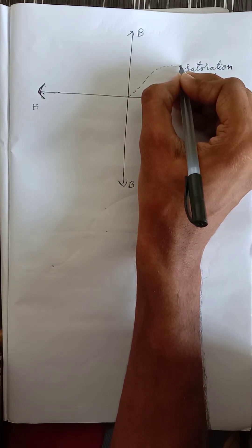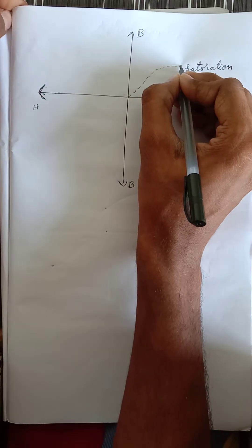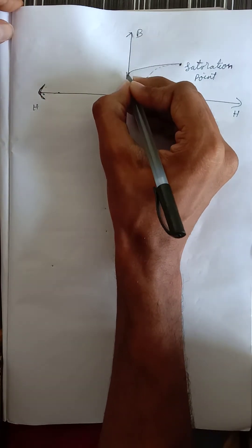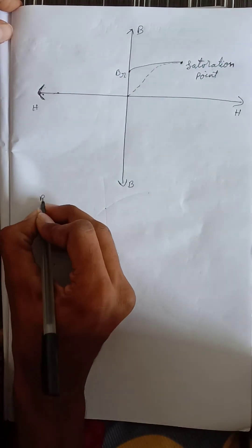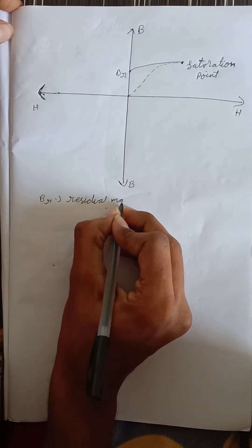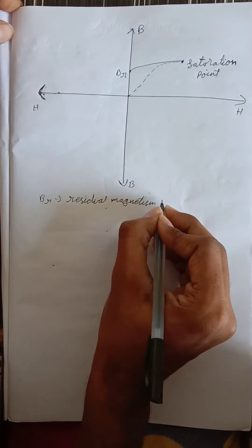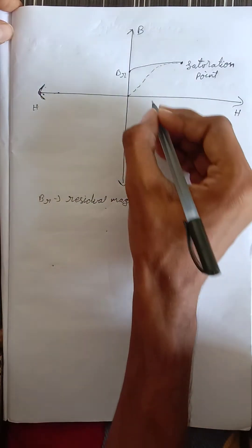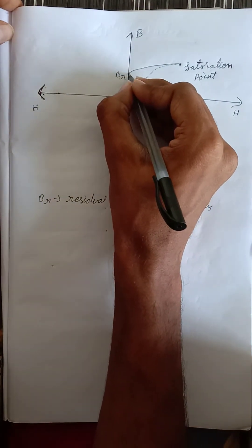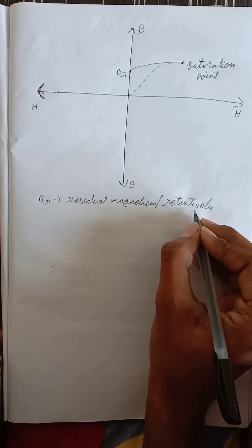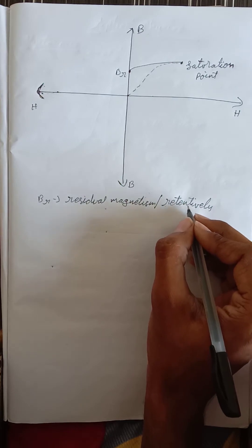To bring the material back to zero, we remove the applied external magnetic field. But the material does not reach zero; instead it reaches a point on the B axis — where B is the magnetic flux density — and this point is represented as BR. BR means residual magnetism or retentivity. Retentivity means the amount of magnetic flux that remains in the material when we remove the external magnetic field.